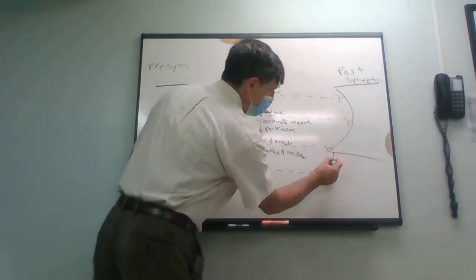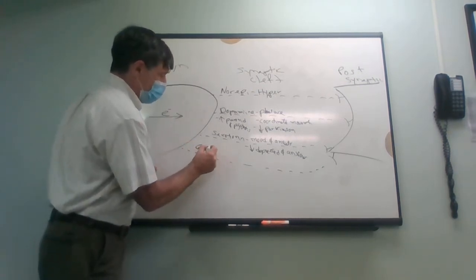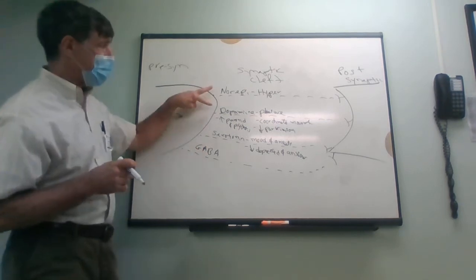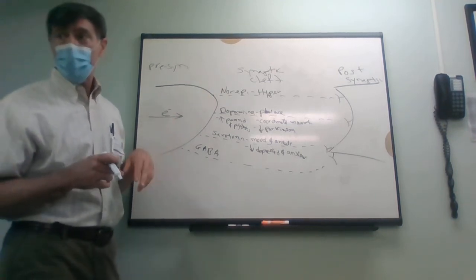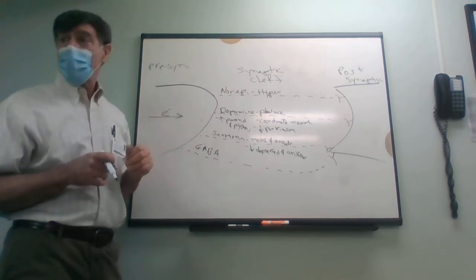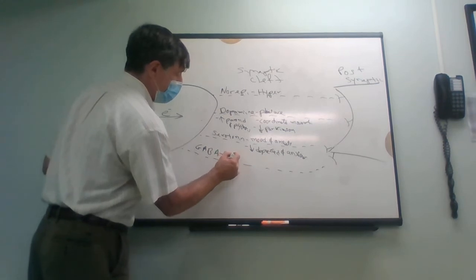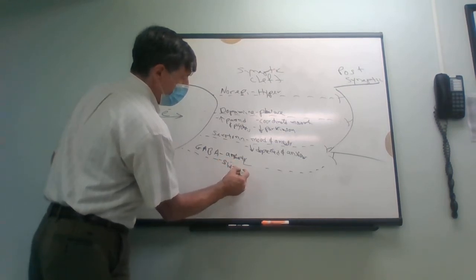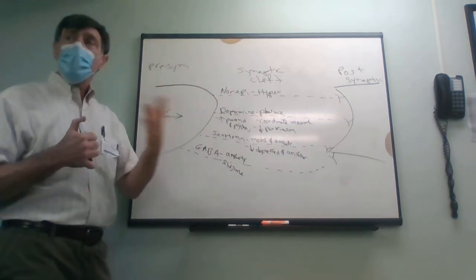Another neurotransmitter is gamma-aminobutyric acid — we'll call it GABA. A student said the way to remember it is 'GABA brake' — GABA is the brake of your brain. If you had your foot fully on the gas with no brake, you're in trouble, and that's someone coming off alcohol. GABA helps regulate anxiety and seizures.